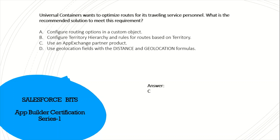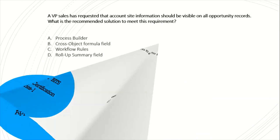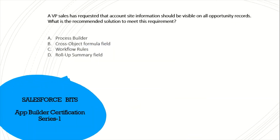Which two features can be used to allow users to access visual workflows? A custom button — I don't think so. Invoked by a process — yes, you can invoke visual workflows via a process. Visual workflow launcher — yes, of course. Quick action — I don't think you can call a visual workflow from a quick action. So the correct answer is B and C.